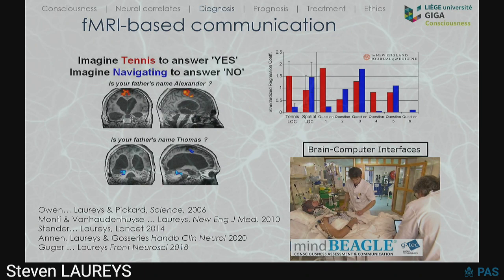Once we have identified patients where there is residual consciousness, the next step is to try to establish functional communication. Technology can help us there. This is the work with Adrian Owen's team, asking patients to imagine mental imagery tasks — motor imagery. They can't control their muscles, but their motor cortex would activate, showing they do indeed hear and understand. We can decode that, and with another task like spatial navigation activating parahippocampal areas, we see patients being able to answer questions purely by modulating their brain activity.